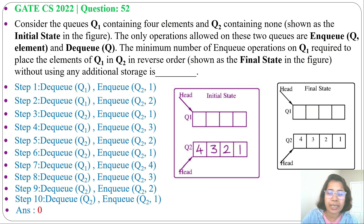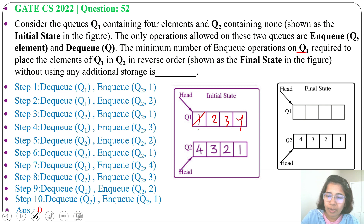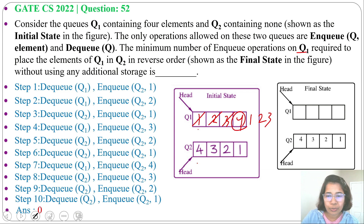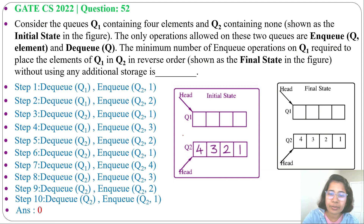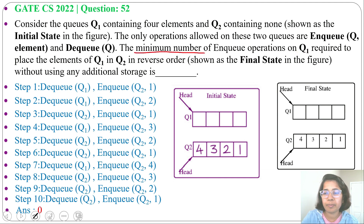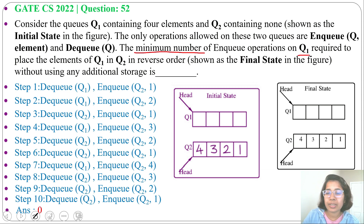If the question asked for the maximum number of NQ operations on Q1, you could DQ from Q1 and NQ back at Q1 repeatedly — then DQ 4 and insert into Q2. That would maximize NQ operations on Q1. But since the question asks for the minimum, the answer is 0, as we can reverse the order in Q2 without a single NQ on Q1.